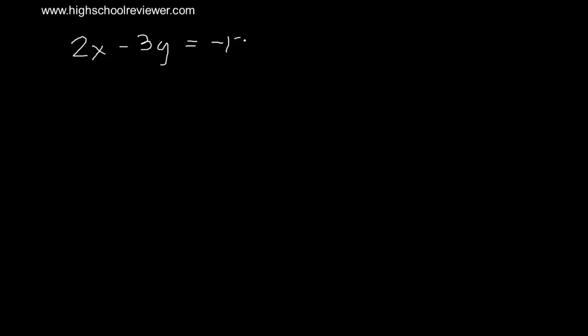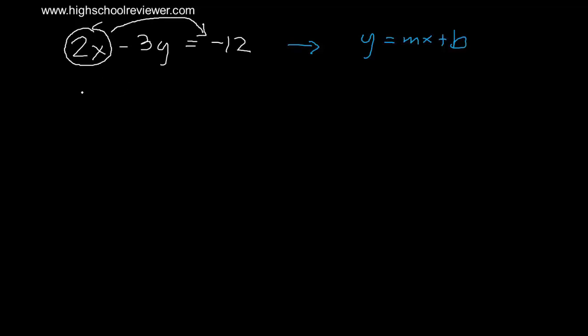Let's have another problem: positive 2x minus 3y equals negative 12. Convert this to the form y equals mx plus b. First, we need to transpose positive 2x to the other side. What will be left on this side will be negative 3y. Transposing positive 2x will change its sign from positive to negative, so we now have negative 2x on the other side.